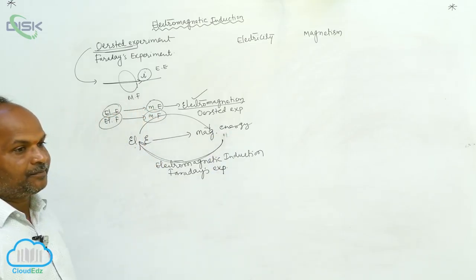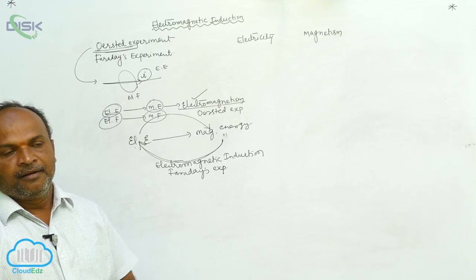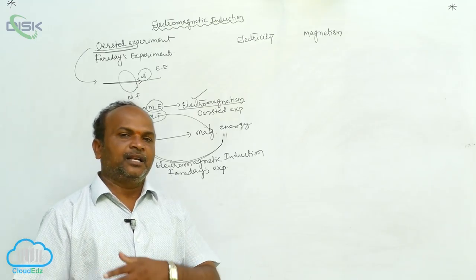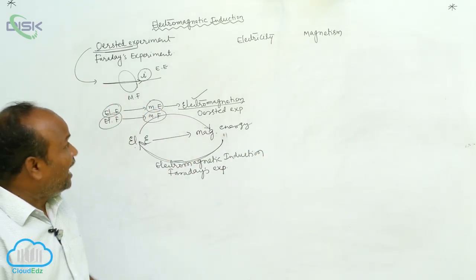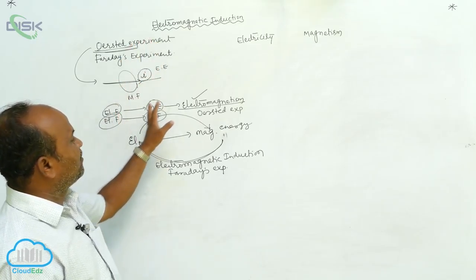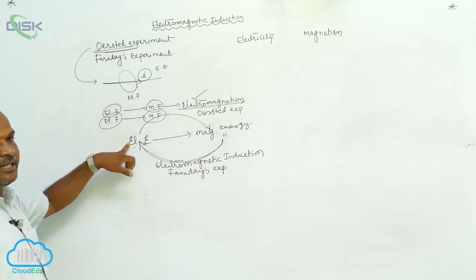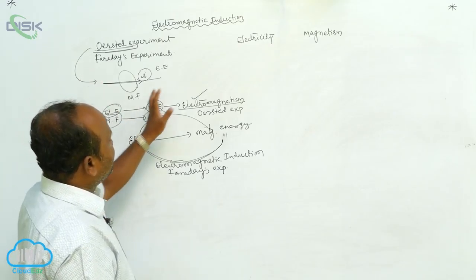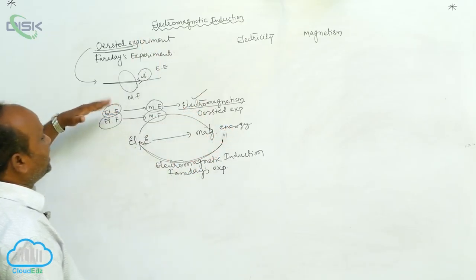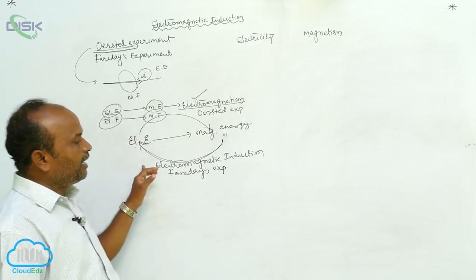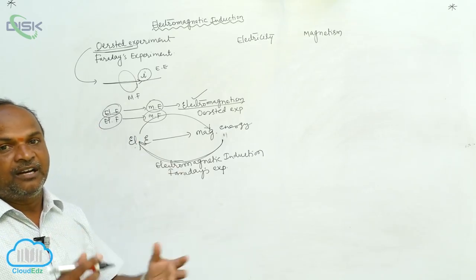Now here there are two types of energies: electrical energy and magnetic energy. According to the conservation of energy, electrical energy can be converted into magnetic energy, and magnetic energy can be converted into electrical energy. By Oersted's experiment, electrical energy is converted into magnetic energy. By Faraday's experiment, magnetic energy is converted into electrical energy. Now, what are Faraday's experiments?